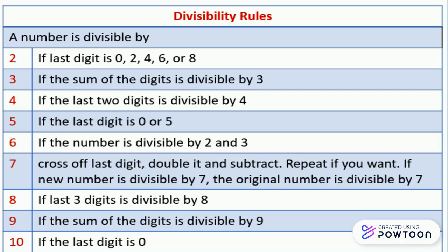Divisible by 4 if the last two digits are divisible by 4. Divisible by 5 if the last digit is 0 or 5. Divisible by 6 if the number is divisible by both 2 and 3.